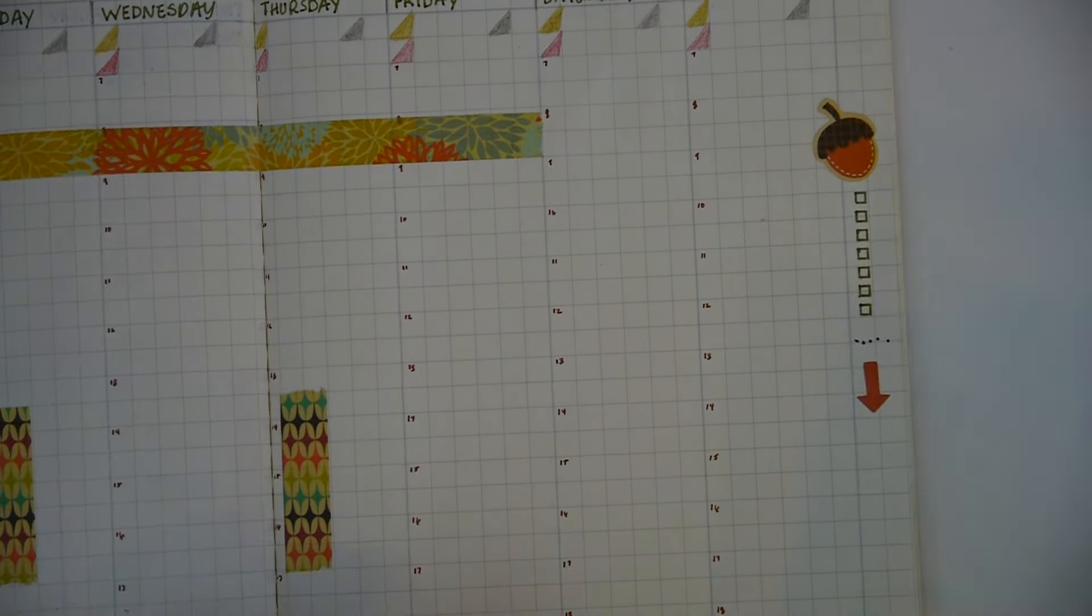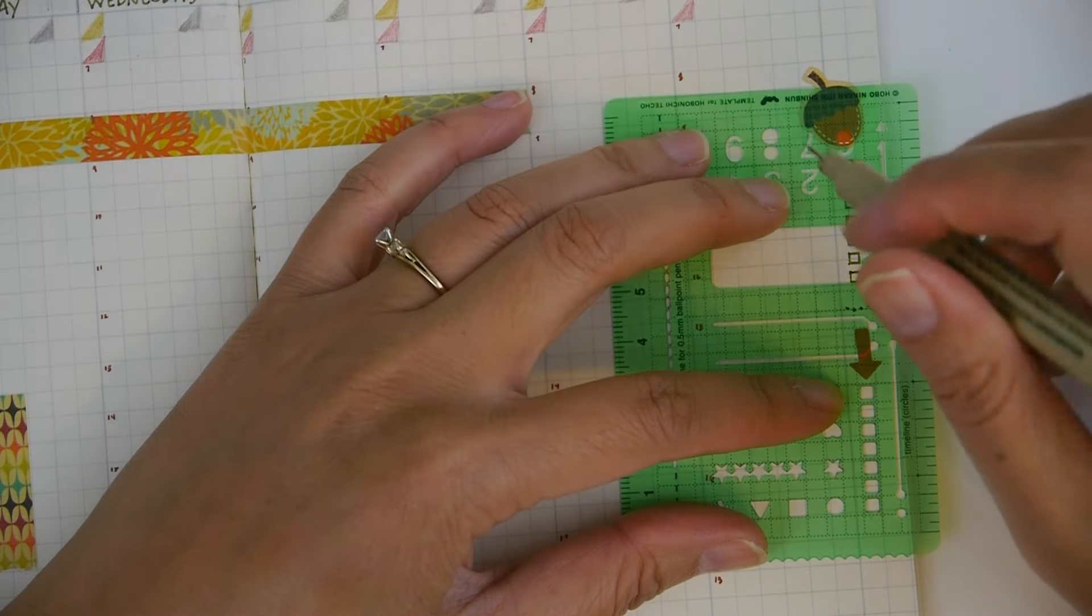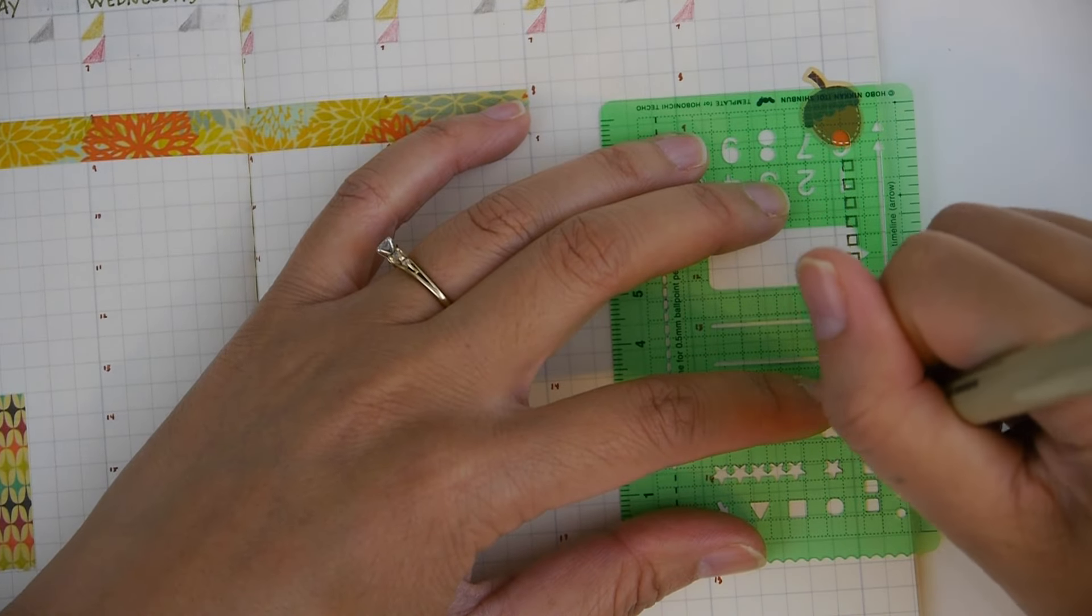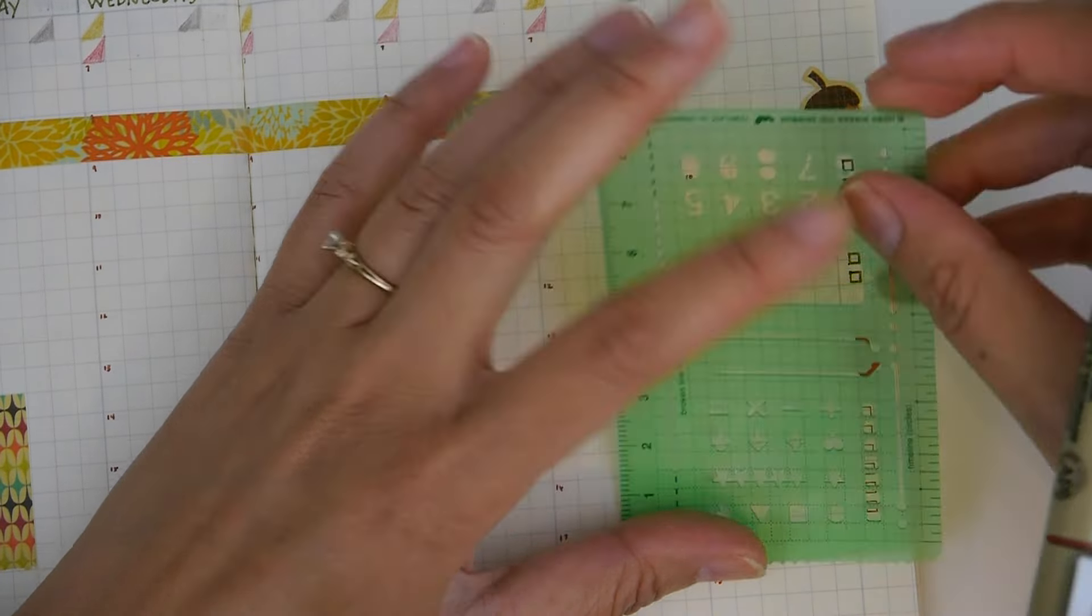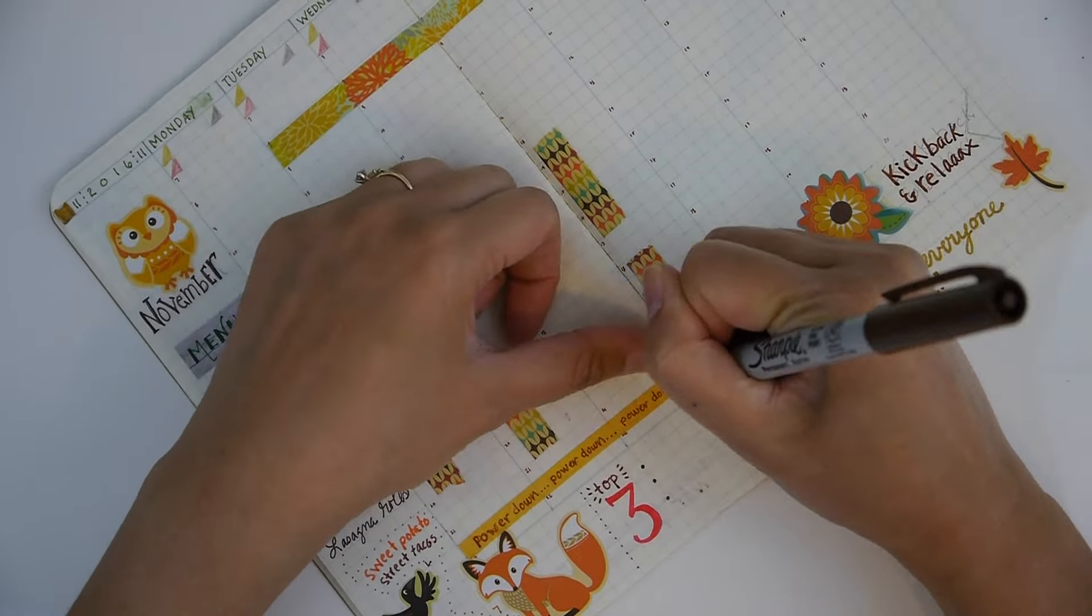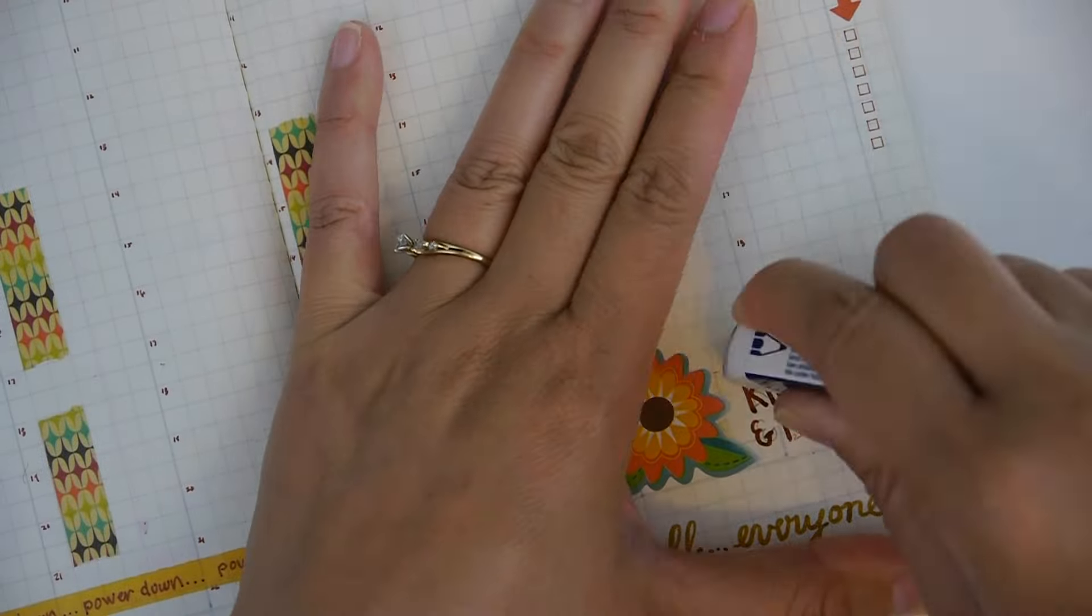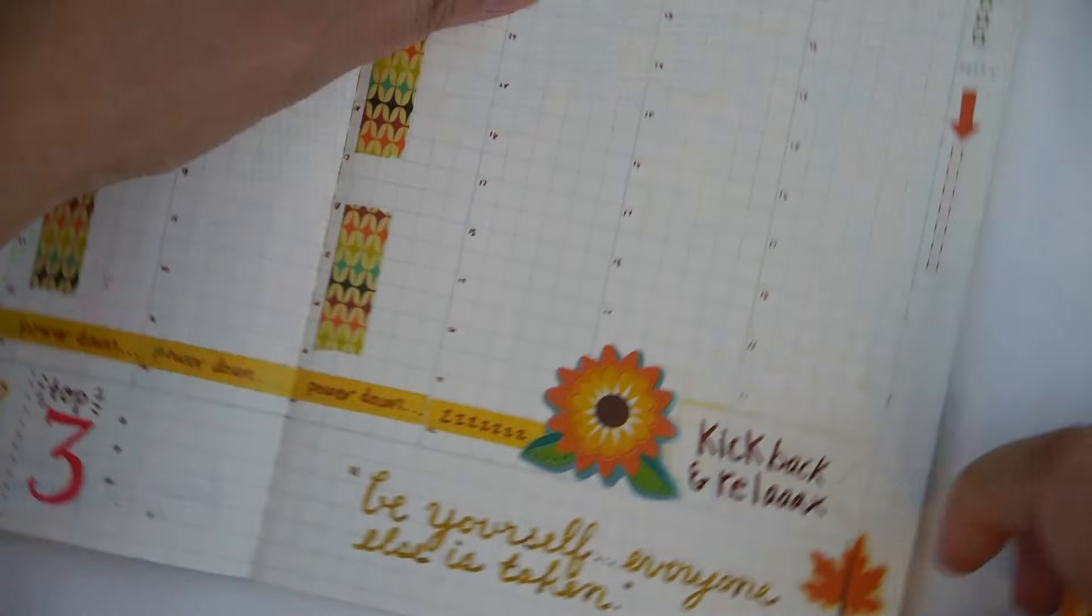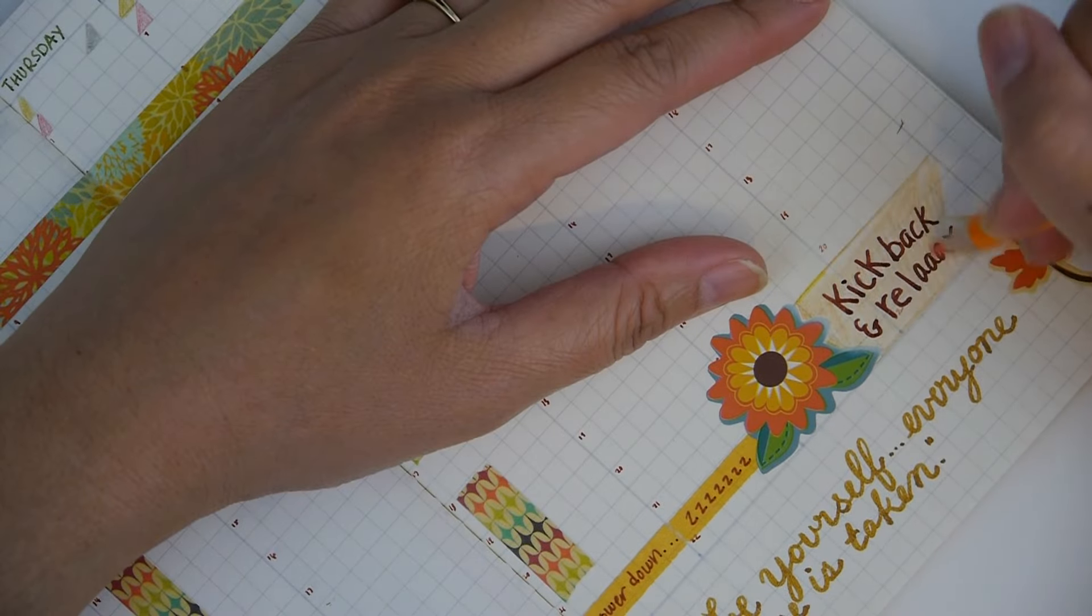And then I'm trying a new tracker. Instead of water, I'm trying to track that I power down at the same time every evening and stop doing screen time. So I'm writing another reminder here with washi. Kind of a night owl, so if I work with screens I stay up too late.